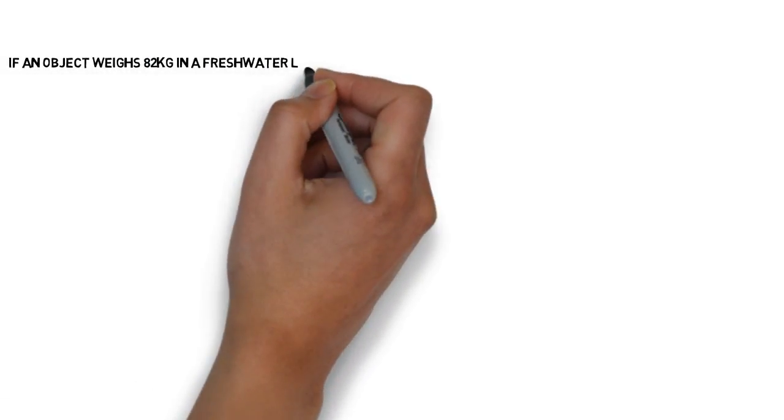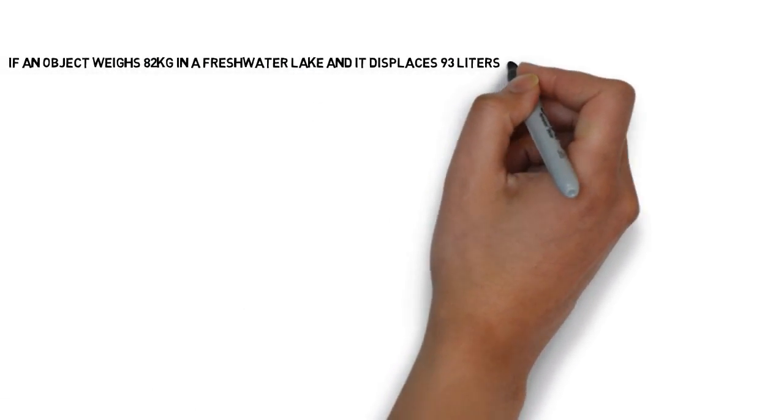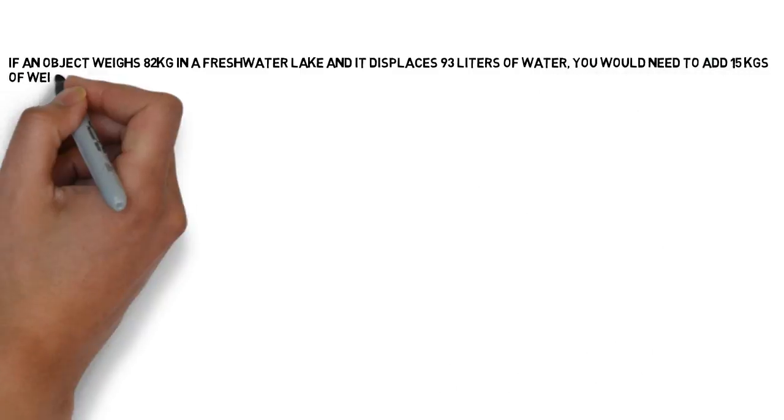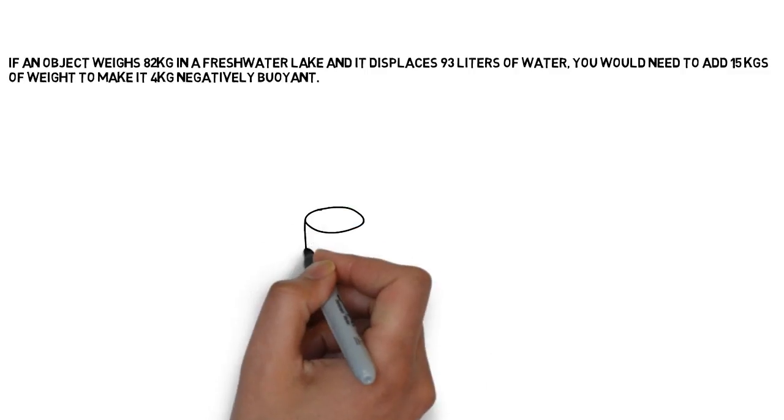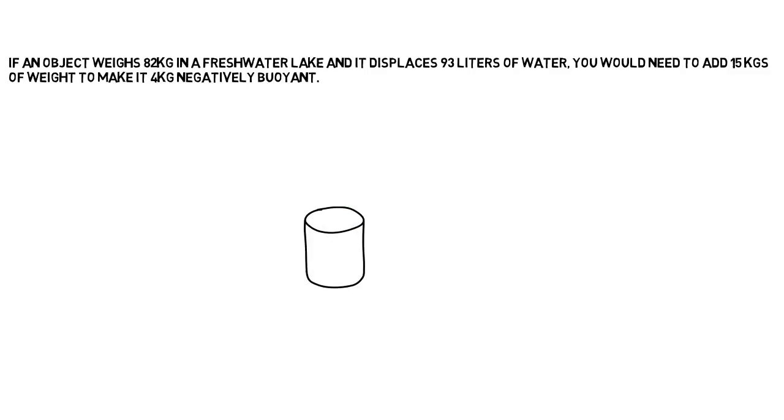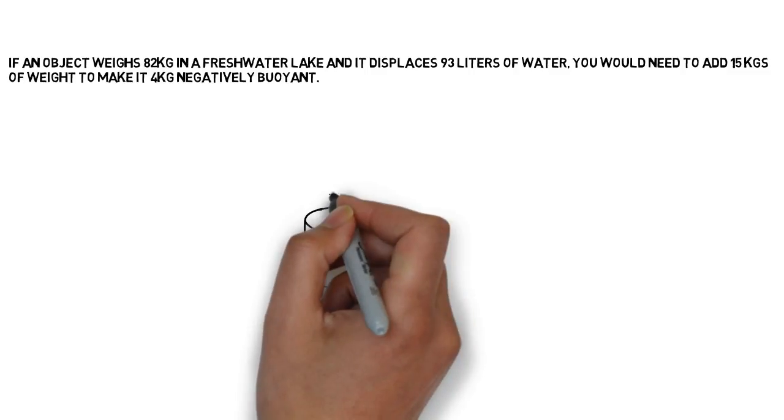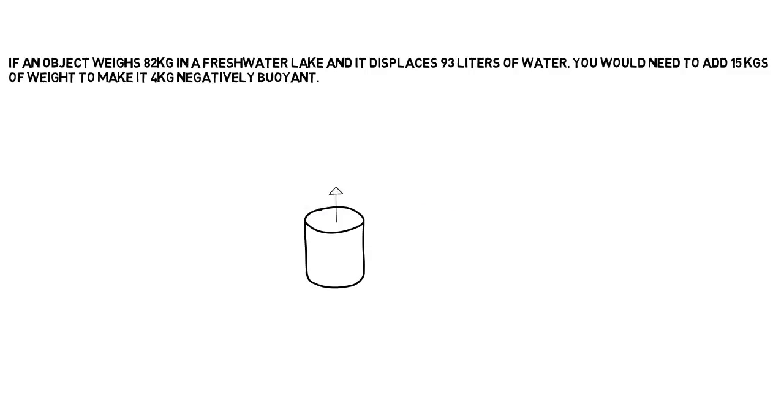Okay, so I've been sent a question by a subscriber. Here is how to answer it. If an object weighs 82 kilograms in a freshwater lake and it displaces 93 liters of water, you would need to add 15 kilograms of weight to make it 4 kilograms negatively buoyant, a true or false question.